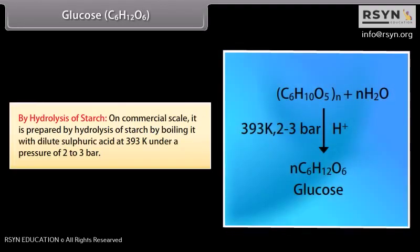On commercial scale, glucose is prepared by hydrolysis of starch by boiling it with dilute sulfuric acid at 393 Kelvin under a pressure of 2 to 3 bar.